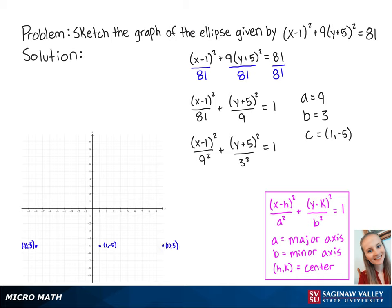The minor axis points will be 3 above and 3 below the center. So the first is at (1, -2), and the second point is at (1, -8). Now we will connect the points to get an ellipse that looks like this.